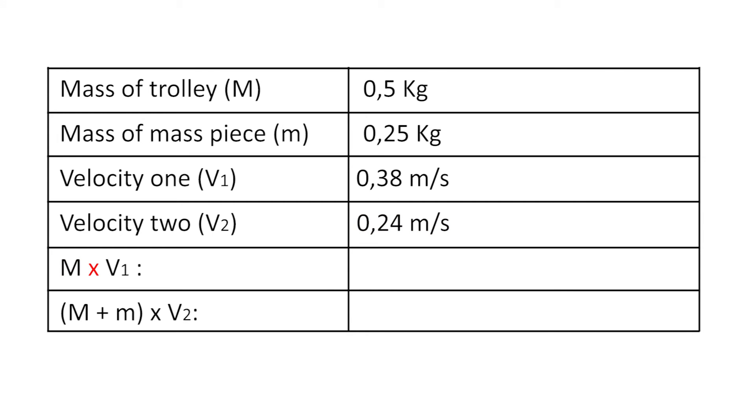Capital M times V1, which is the mass of the trolley times velocity before collision, was equal to 0.5 times 0.38, which was equal to 0.19 kilograms meter per second.